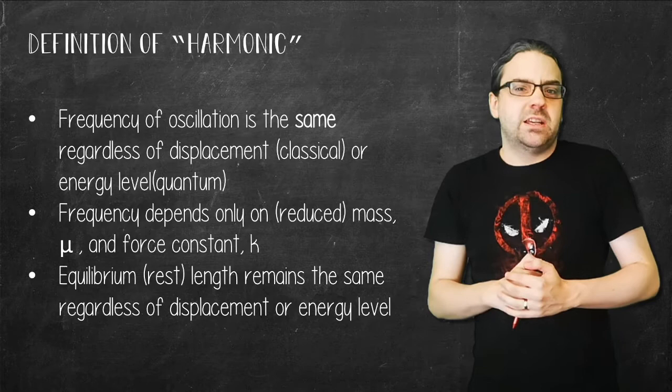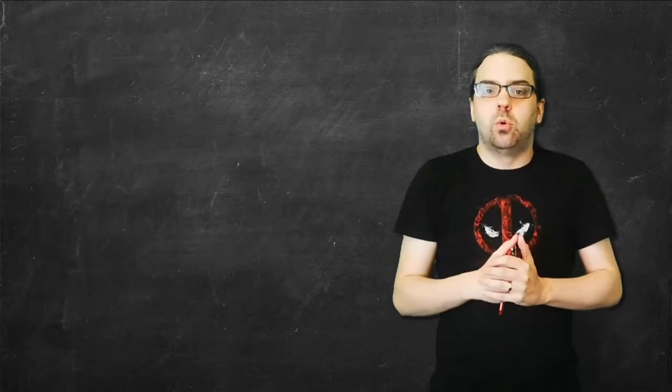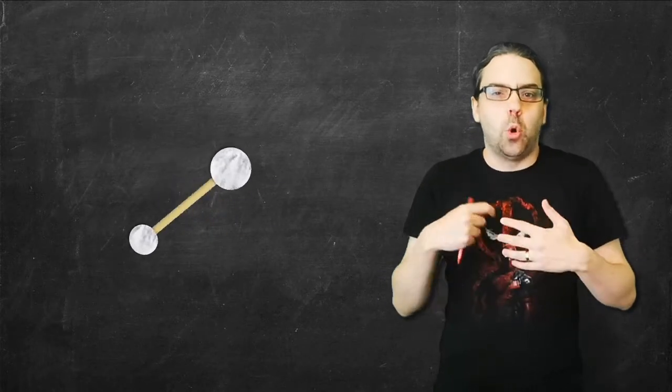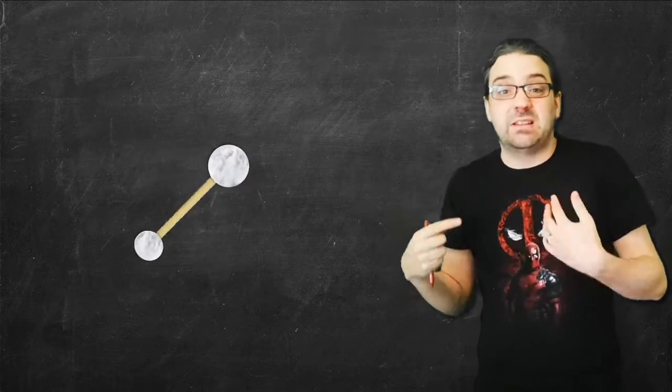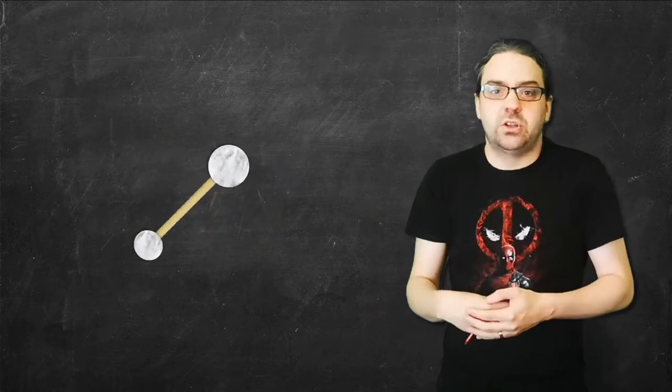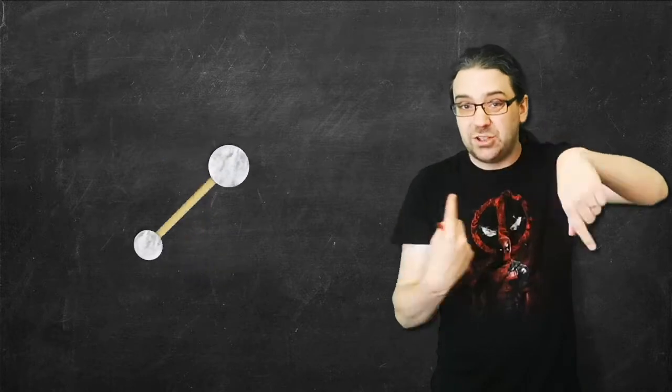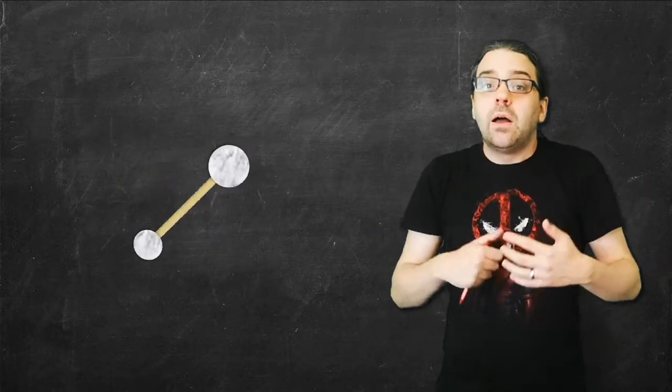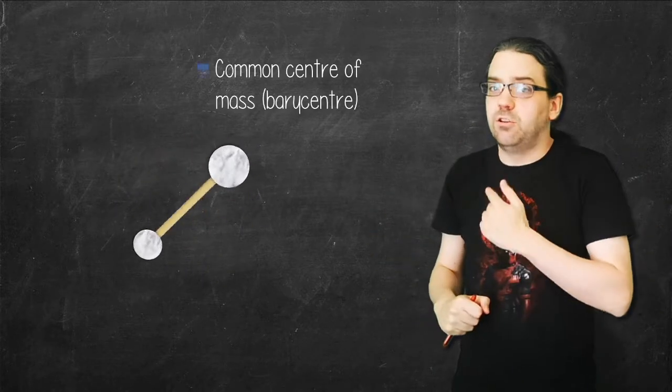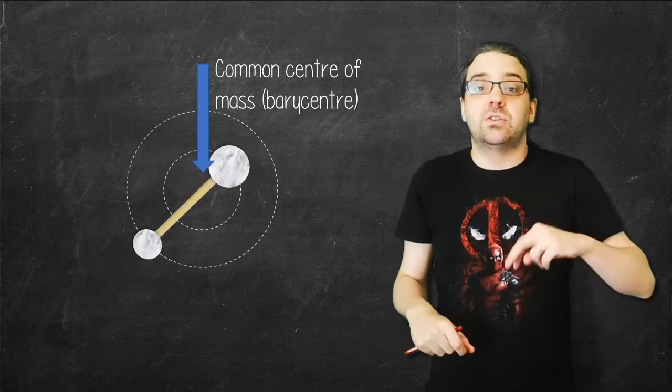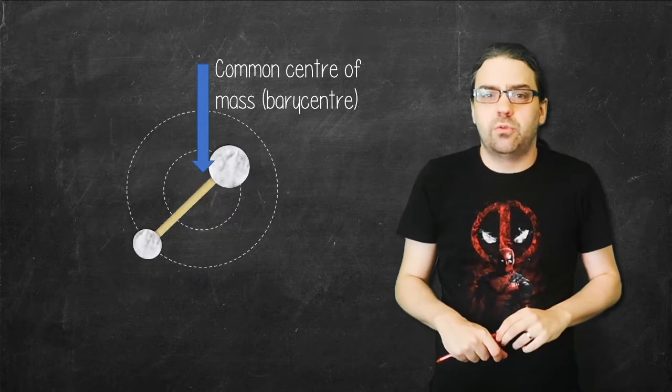The next reduced mass case we're going to look at is rotational or orbital motion. So if two objects are orbiting each other, such as electrons around an atom, a planet around a sun, or two atoms in a diatomic molecule that are rotating, they actually orbit a common center of mass. That again gives us two dynamic equations, one for each object.